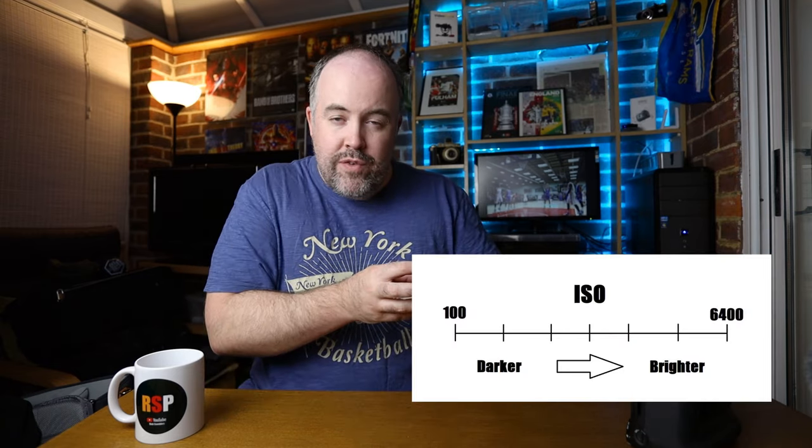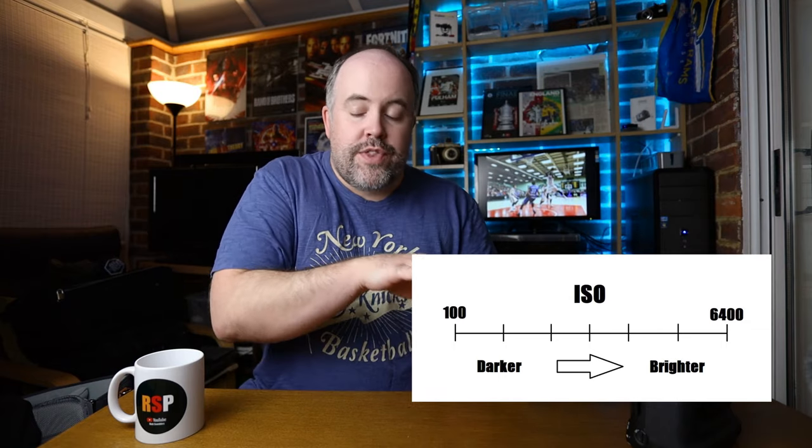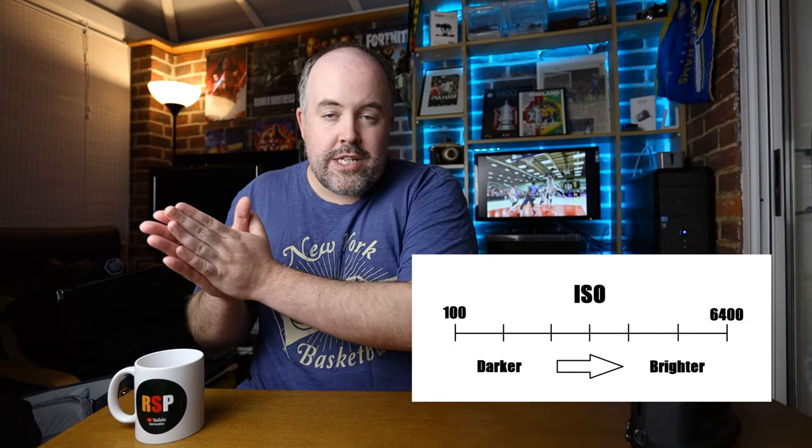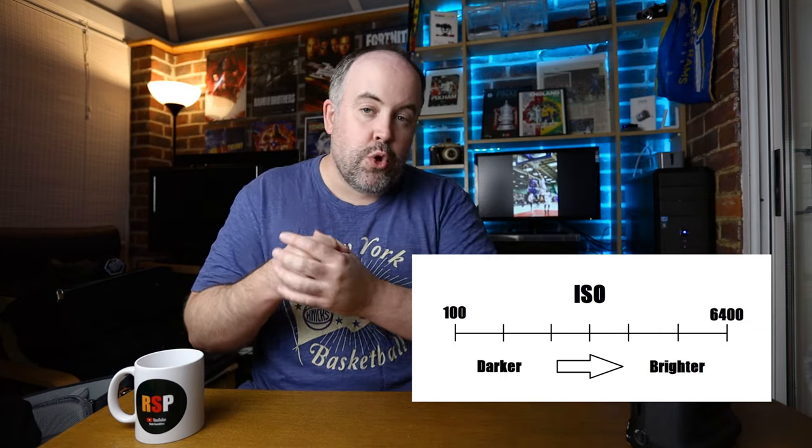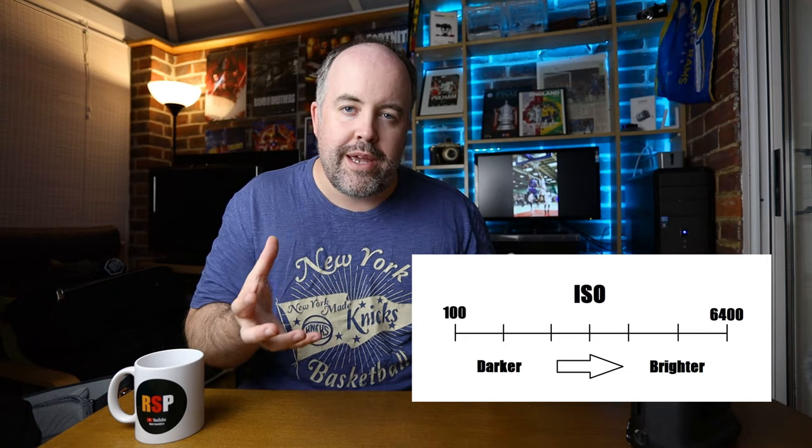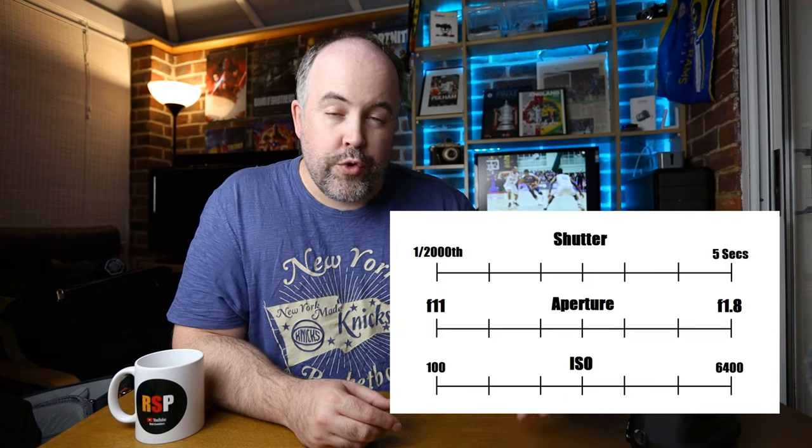The third thing is your ISO level, which is all to do with how sensitive your sensor is to light — how much light do we want our sensor to absorb. The lower your ISO level, the darker your image will be. The higher the ISO level, the more light is being absorbed and the brighter your image will be.